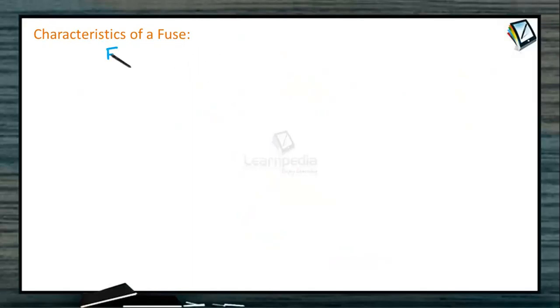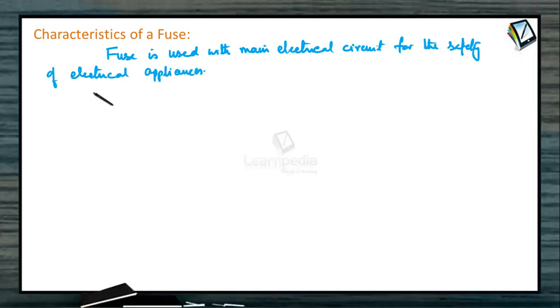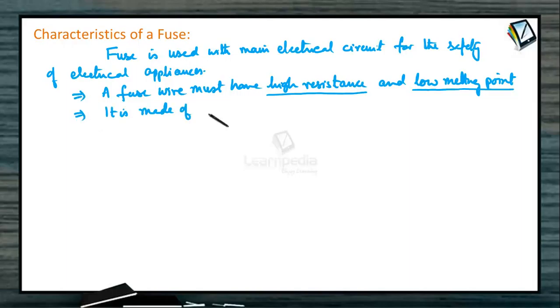Characteristic of a fuse. Fuse is used with main electrical circuit for the safety of electrical appliances. A fuse wire must have high resistance and low melting point. Hence, it is generally made up of tin lead alloy.